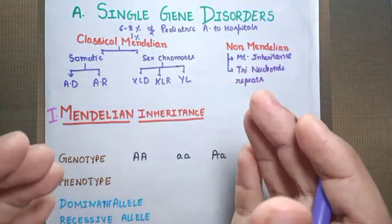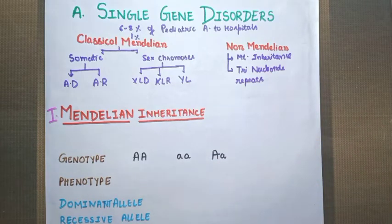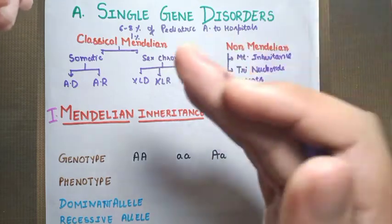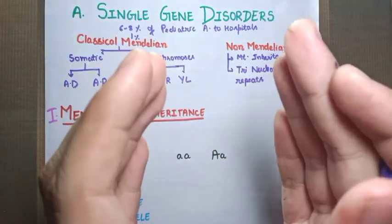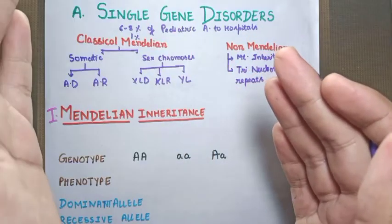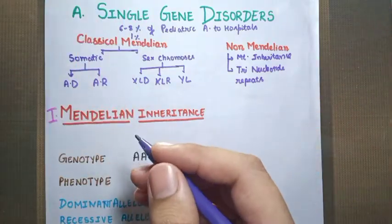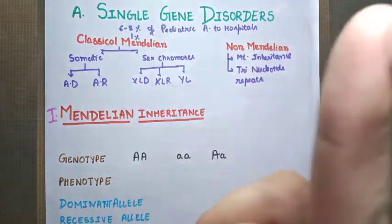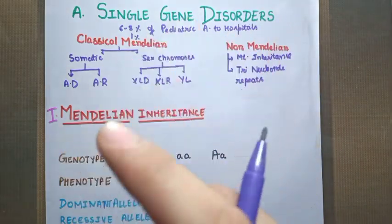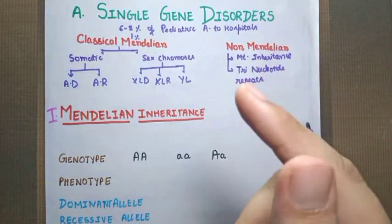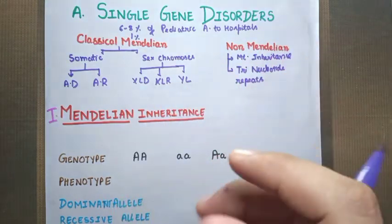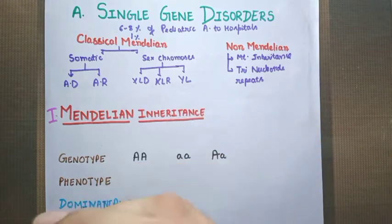We will discuss more about non-Mendelian inheritance after discussing Mendelian modes of inheritance. According to Mendel, there are two alleles for a gene — no more than that. Alleles are different forms of a gene, such as black hair or brown hair, present at the same loci on each set of chromosomes. Each individual also gets one allele from each parent — one allele from father and one allele from mother. These are the basic laws of Mendelian inheritance.